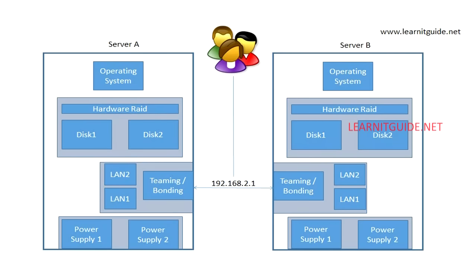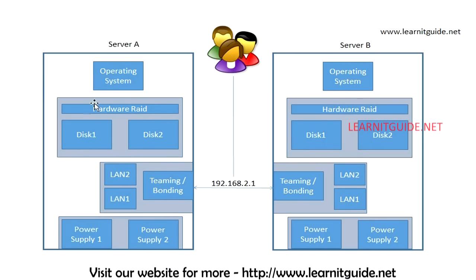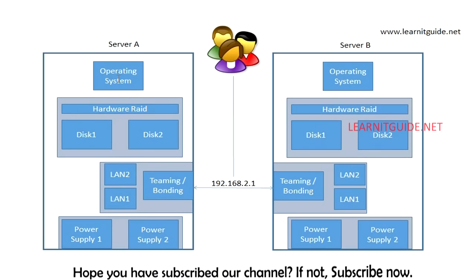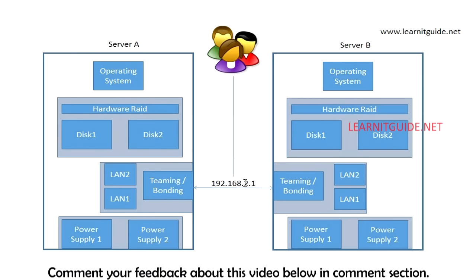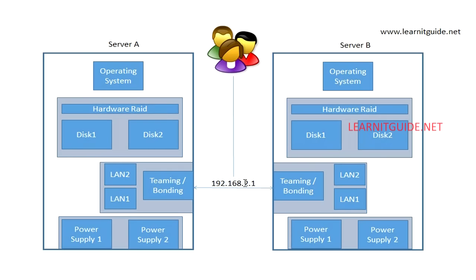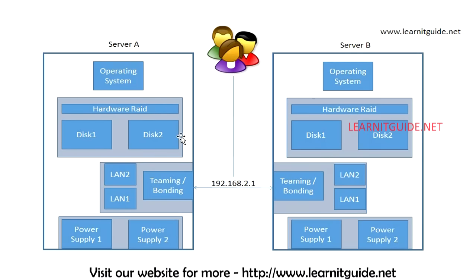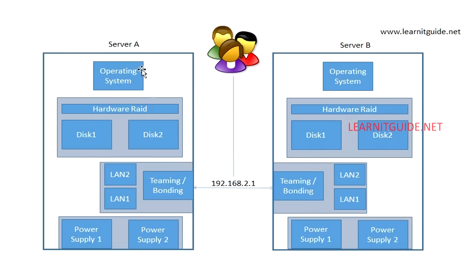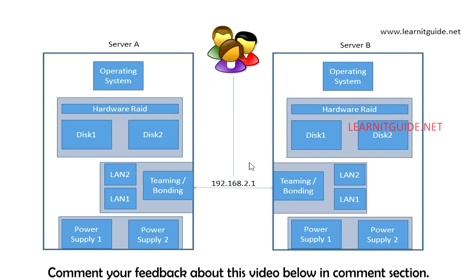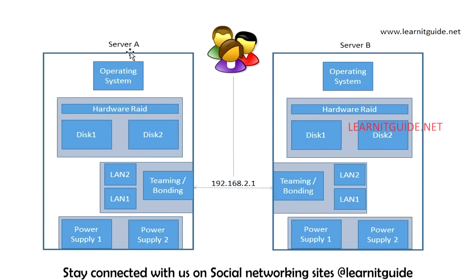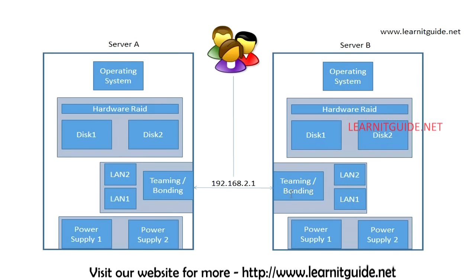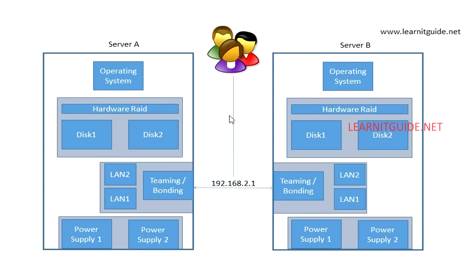Assume I have two servers — Server A and Server B — both with redundant hardware. If I configure IP 2.1 only on Server A and something happens to its operating system, clients cannot access 2.1. Instead, I merge Server A and Server B using a cluster solution and configure 2.1 on the cluster node. If something goes wrong on Server A, the 2.1 IP will move to Server B.